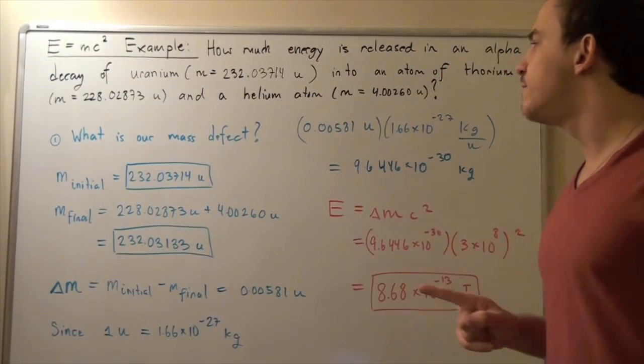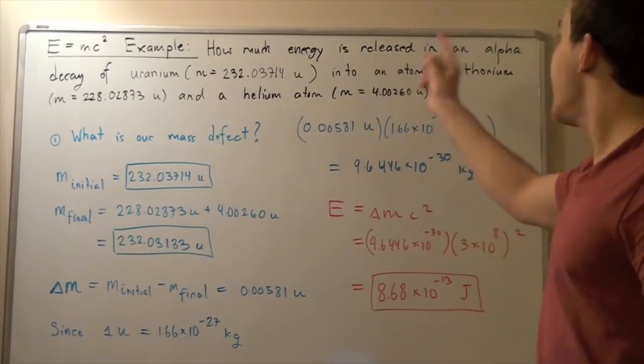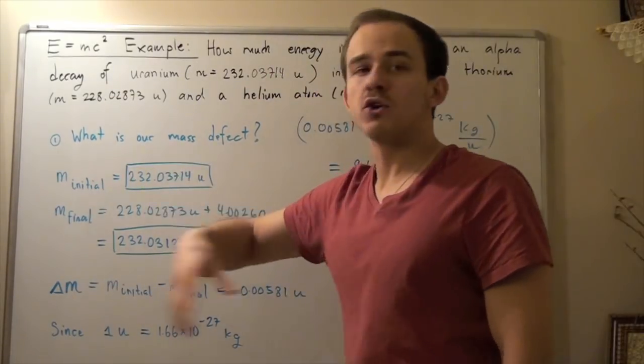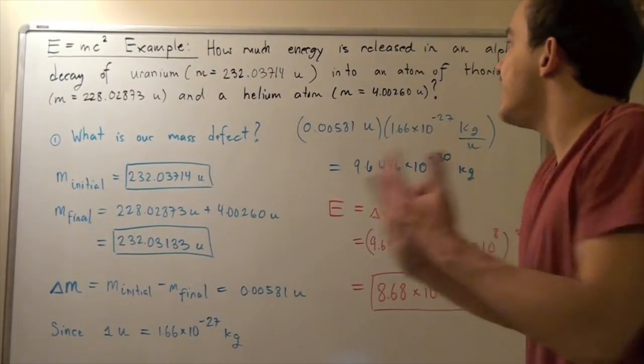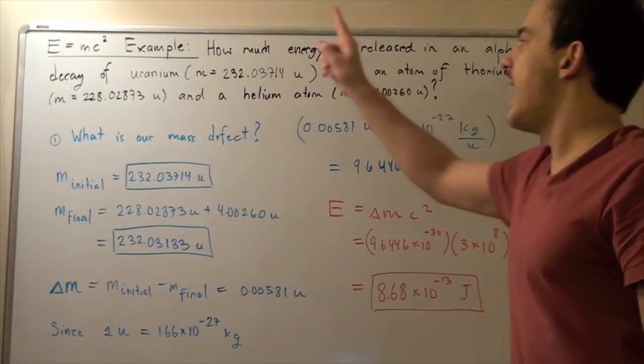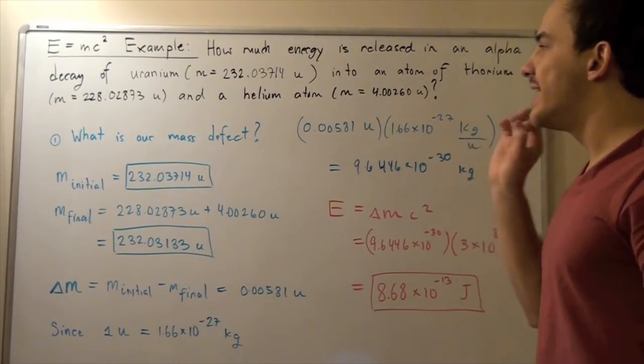Now, we want to find how much energy is released in an alpha decay, a radioactive reaction, of uranium that decays into an atom of thorium and an atom of helium.